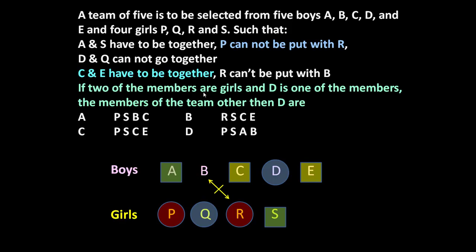Now, if two of the members are girls and D is one of the members, let us select D. Since we have selected D, we cannot select Q — that is the given condition.